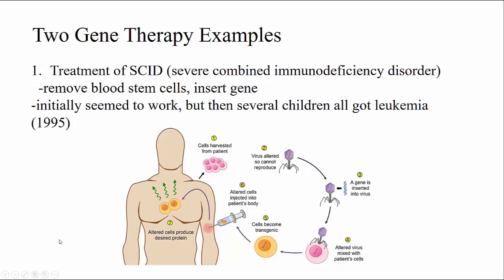I'll talk about two failed examples of gene therapy. The very first gene therapy examples were for some kids who had SCID, a disorder in which these children essentially don't have a functioning immune system. This was done in 1995. The idea was that the one gene they were missing could be transferred using a virus into hematopoietic stem cells — or blood stem cells — and then those fixed cells would be put back into the patient.